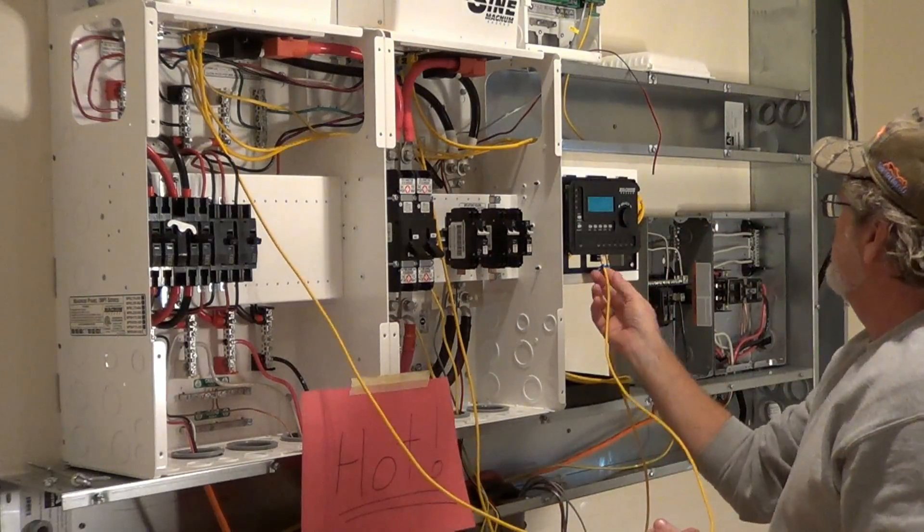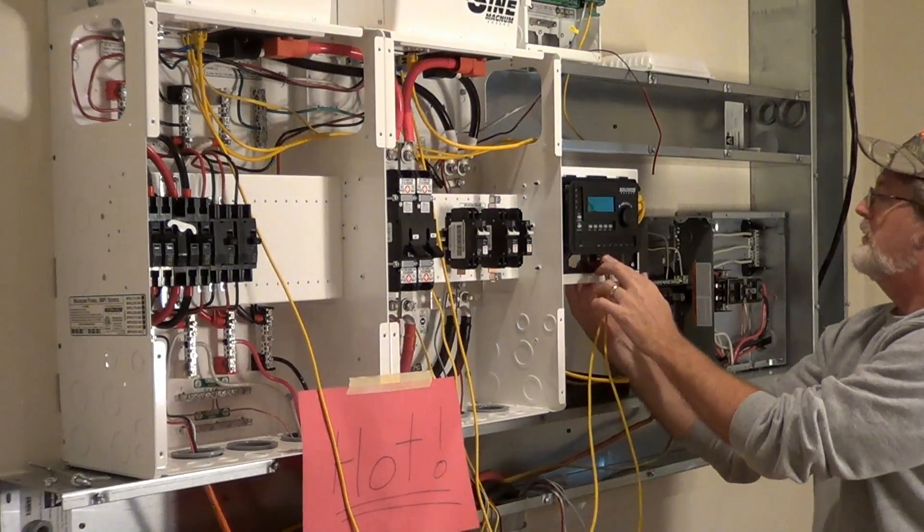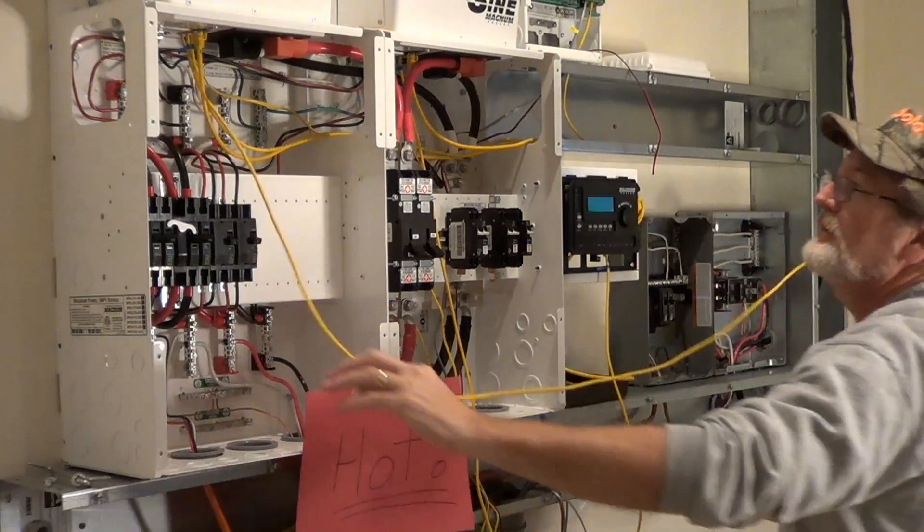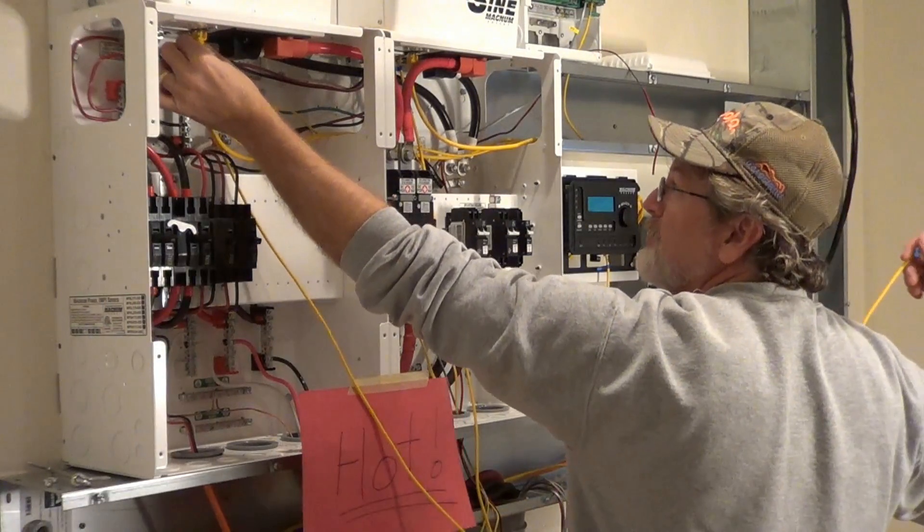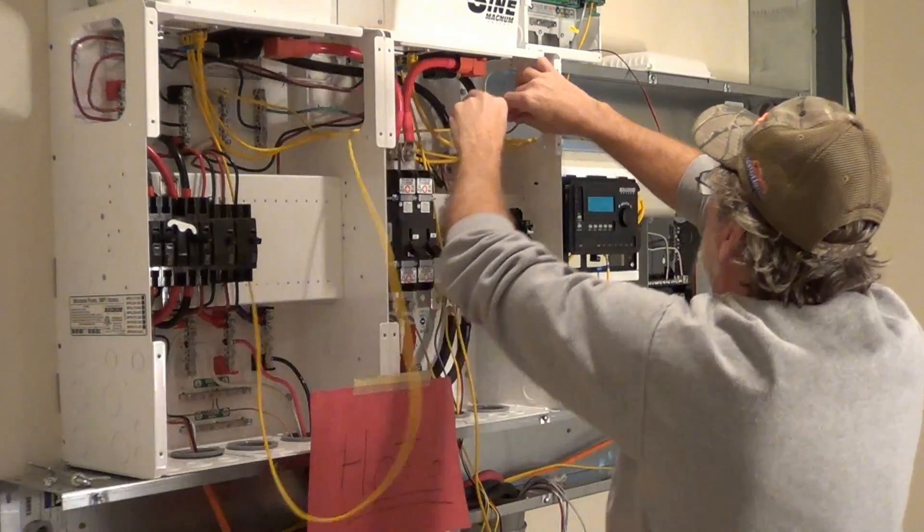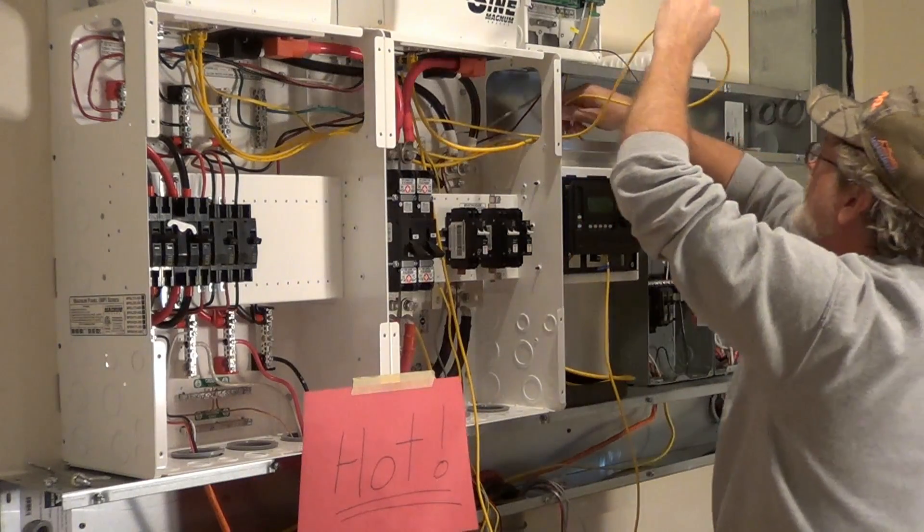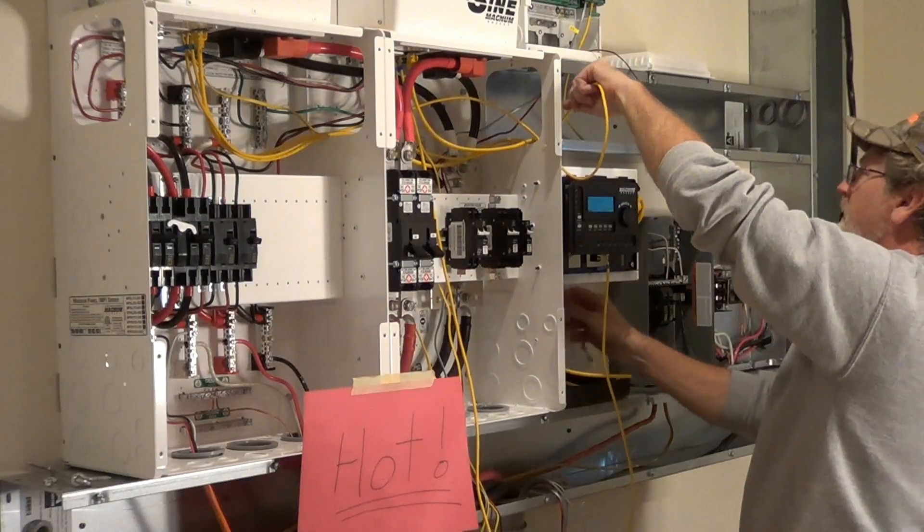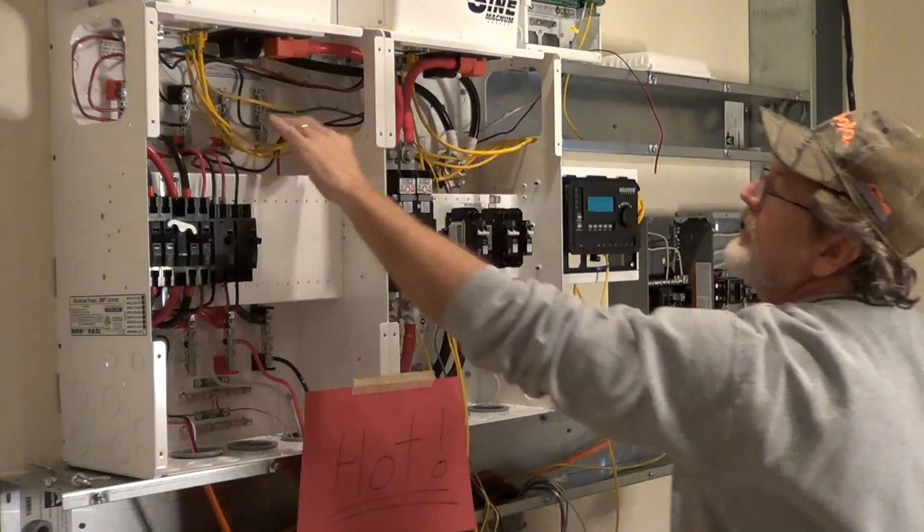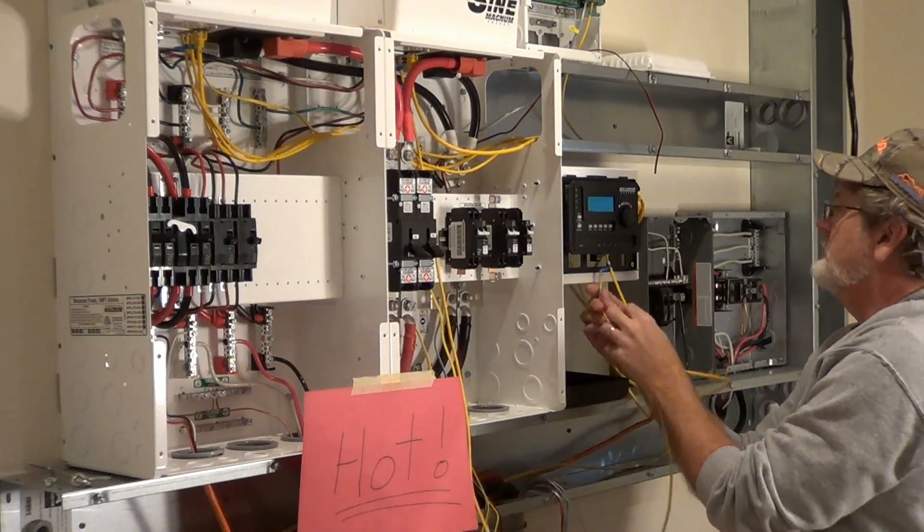Now let's do this one. Here's from P1, this is the remote cable. P1 is going to go over to the remote plug-in on the master inverter. I'll route that back here. So that goes up in here.